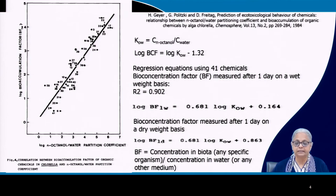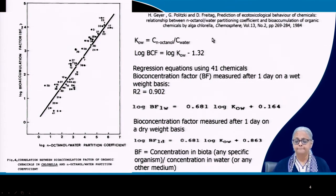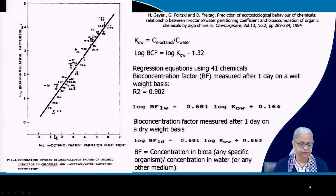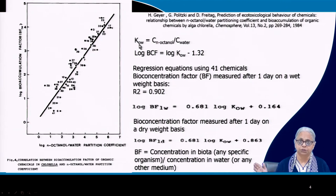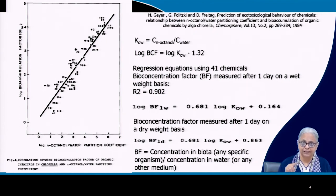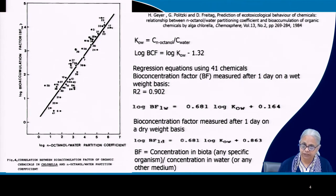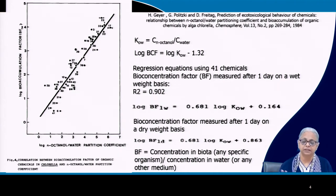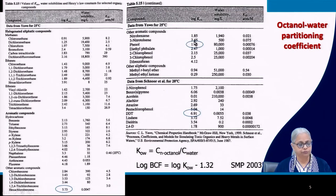Let me give you an example of bioaccumulation and what it is related to. Here on this graph, you see two factors. On the x-axis, you have log N octanol divided by water partitioning coefficient — that is log KOW. KOW stands for the octanol-water partitioning coefficient: C in octanol divided by C in water, where C stands for concentration. If a compound is hydrophobic, it will prefer to be dissolved in octanol and not in water. If it is hydrophilic, the concentration in water will be higher than in octanol.